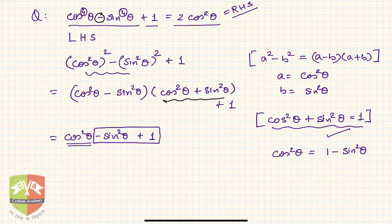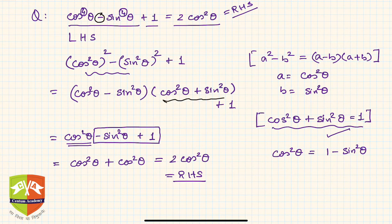So hence using that identity I can write this is equal to cos²θ + cos²θ, which is equal to 2cos²θ which is equal to RHS. This is what the problem was demanding.